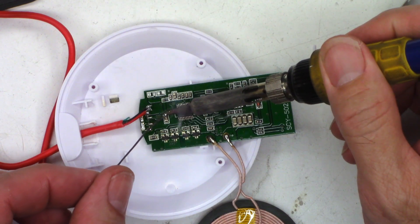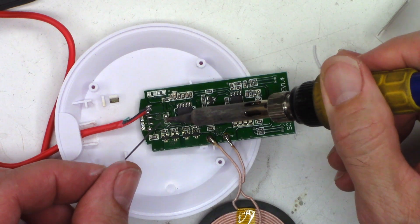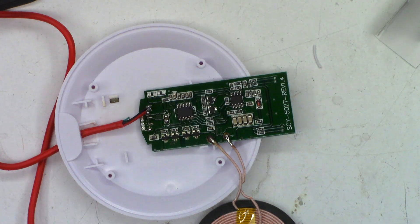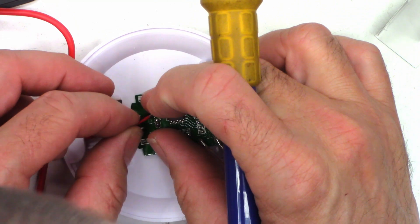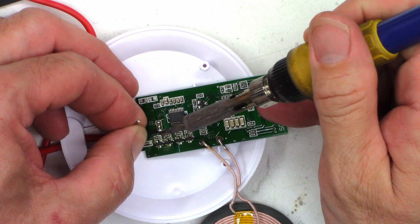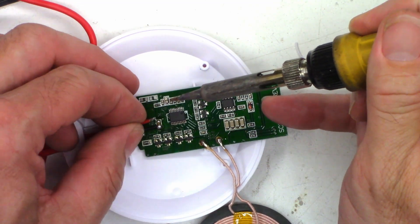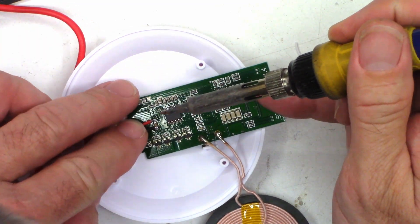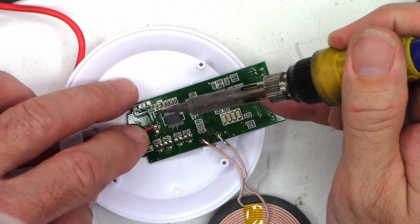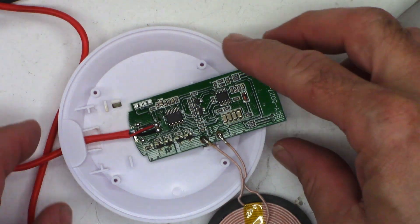So this side that I'm tinning right here is the positive side. This side is the ground side. All right, that looks good.